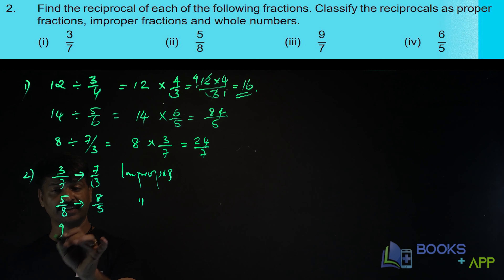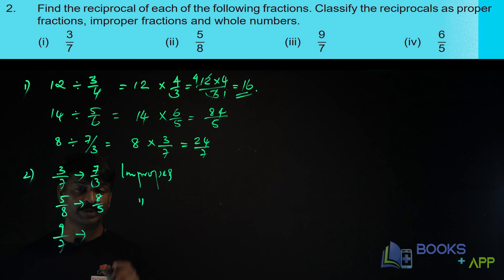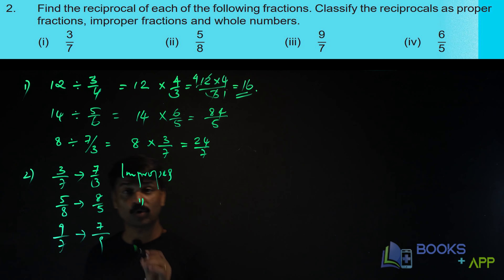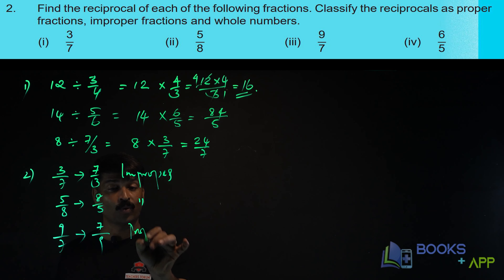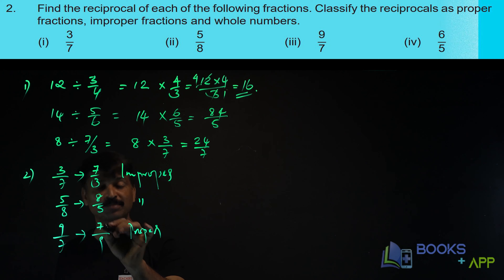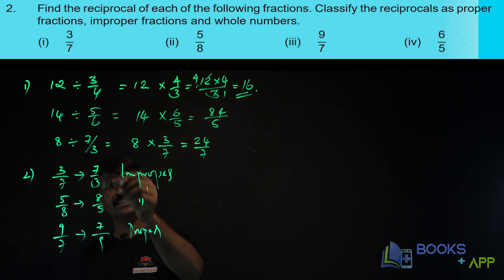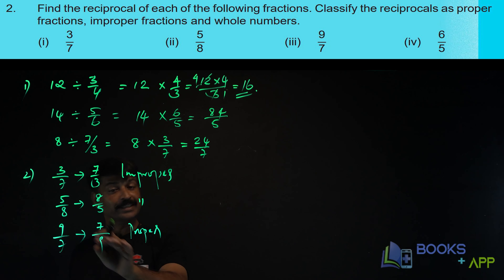Now the third one: 9 by 7. What is the reciprocal of 9 by 7? It is 7 by 9. Is it proper or improper? It is proper, because the numerator is smaller than the denominator. So it is a proper fraction.